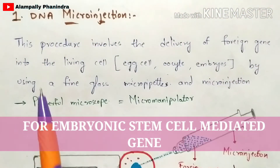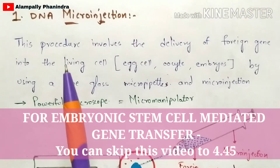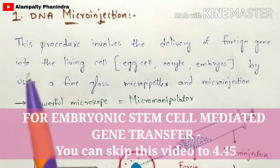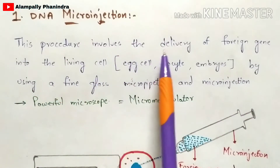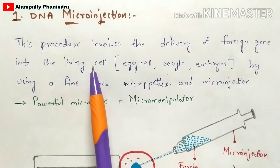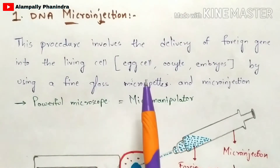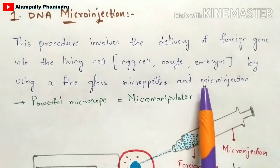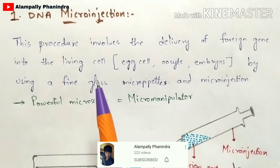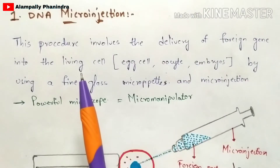In this video let us discuss about DNA microinjection technique as well as embryonic stem cell mediated gene transfer. DNA microinjection is a procedure which involves the delivery of a foreign gene into a living cell — the host cell — which includes egg cells, oocytes, and embryos, by using a fine glass micro pipette and a microinjection apparatus.